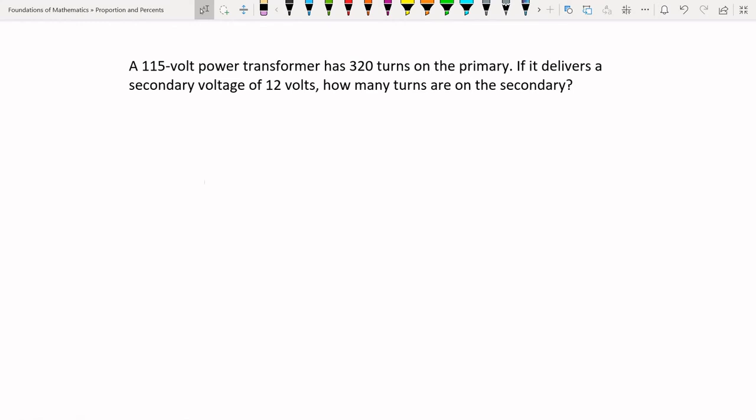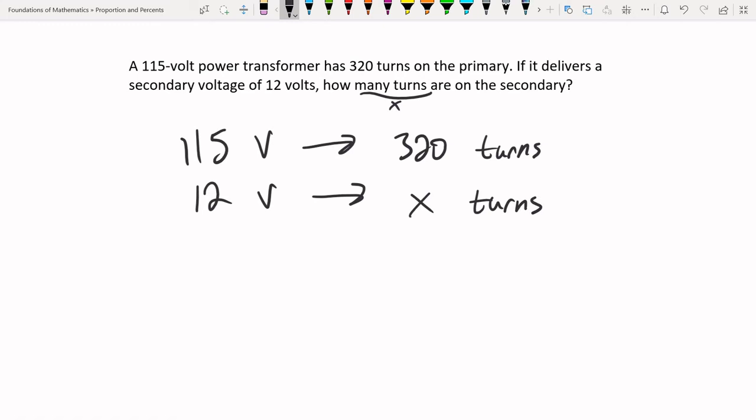Here's a power transformer. It's got a 115 volt transformer that has 328 turns on its primary, meaning the primary coil. And it delivers a secondary voltage of 12 volts. So how many turns on our secondary? So this is again a direct variation. In this case, we have 115 volts goes down to 12 volts. So instead of as one increases, the other increase, now here we have as one decreases, the other decreases. It's still a direct variation. It still satisfies the same relationship. 115 volts goes to 320 turns as 12 volts goes to, well, how many turns? That's going to be our X. X turns. And once again, we can directly create a proportion out of this.